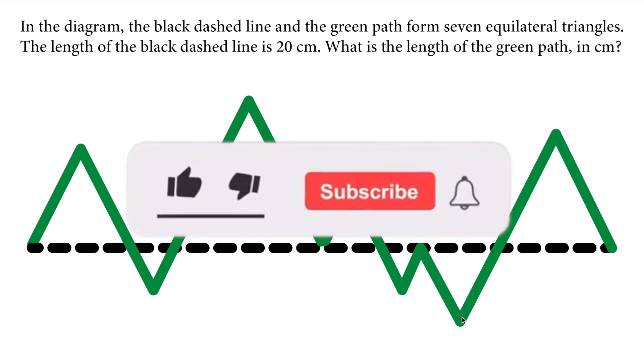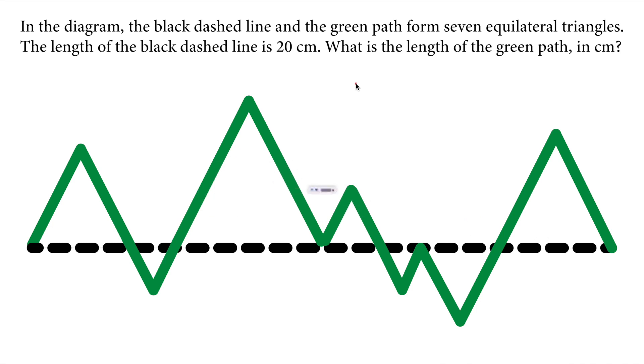All right. This question looks complex, but it's actually quite simple. We are given that the total length of the black line is 20 centimeters. So we can analyze each triangle in detail.